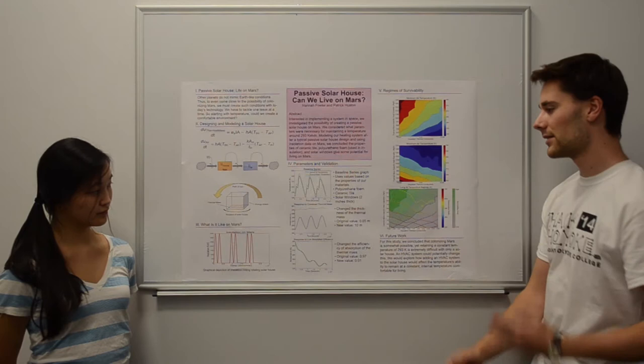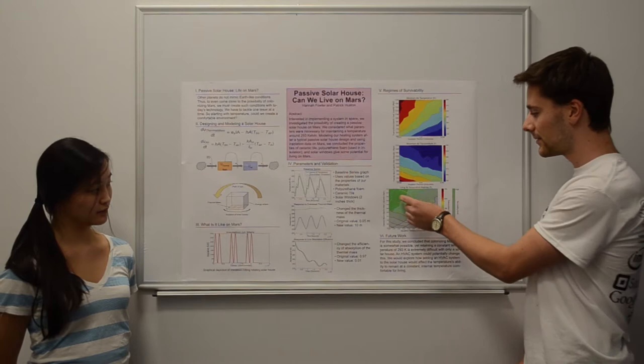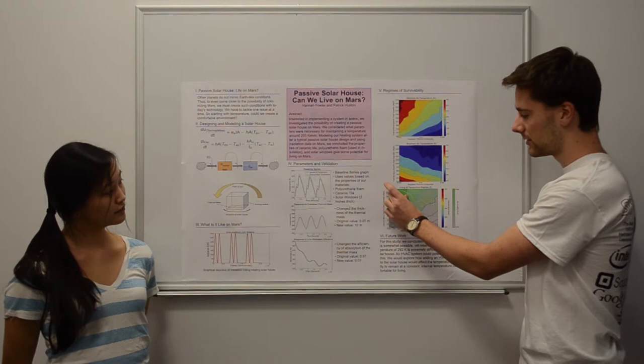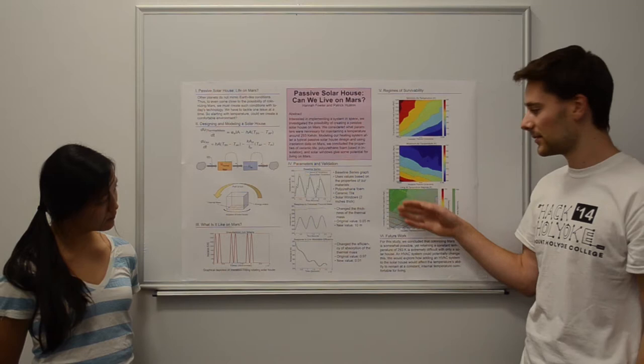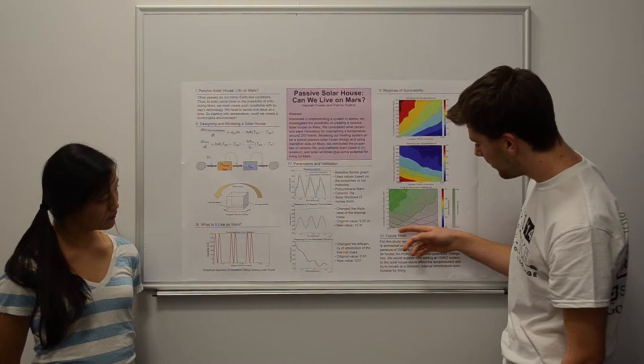And the two lines, two sets of lines going across this way and going across this way represent these two plots overlaid. And as we can see, we like the blue on this plot right here, the lower temperatures right here, and the warmer temperatures for the other one. And what we get is a regime of survivability plot, which is green.